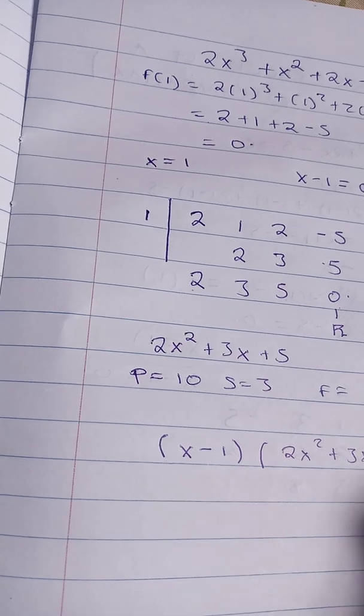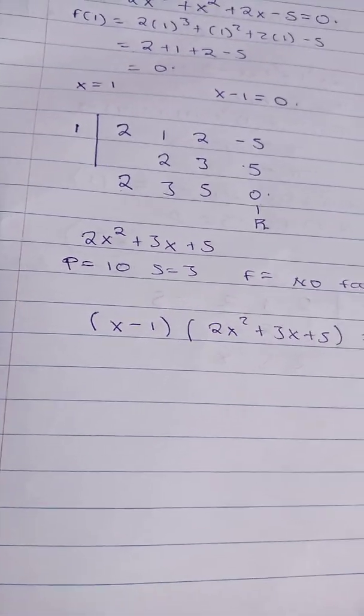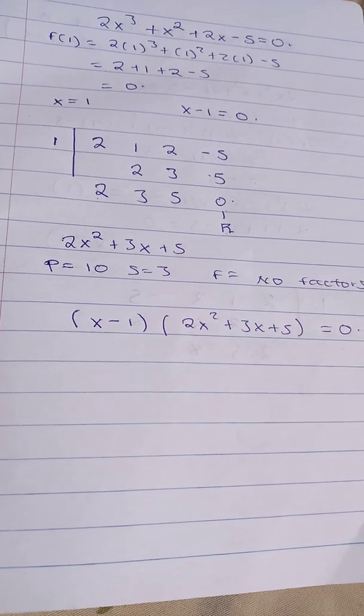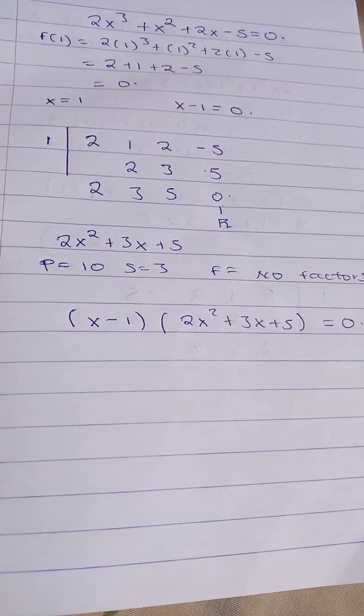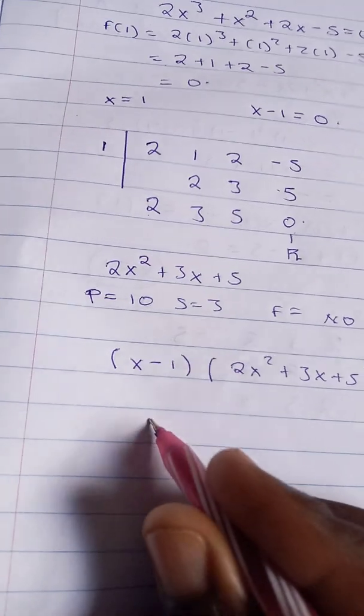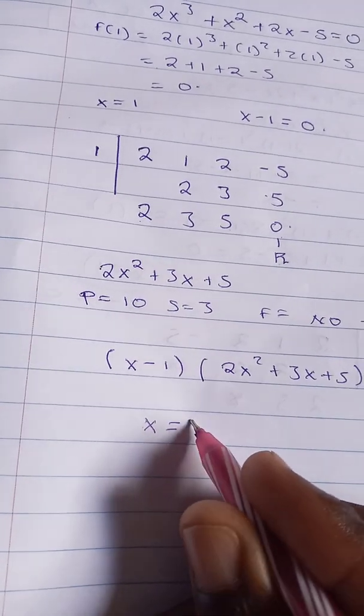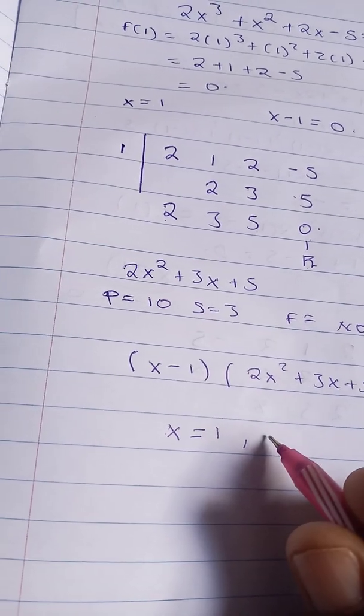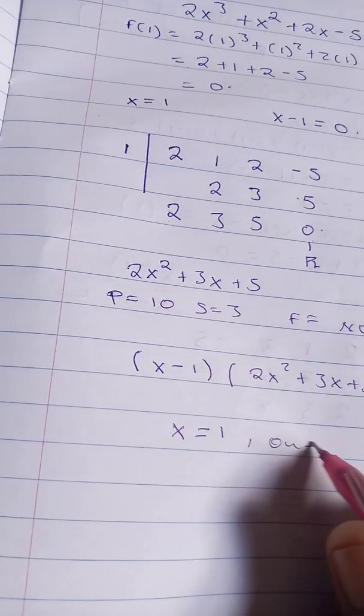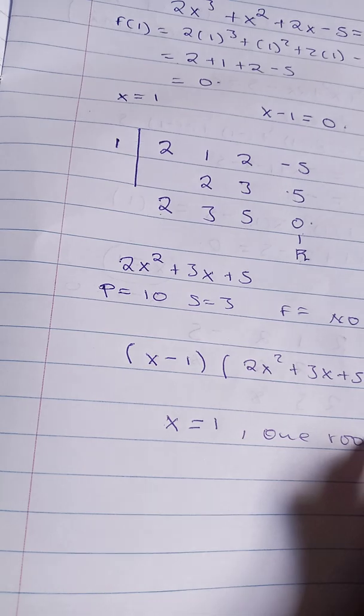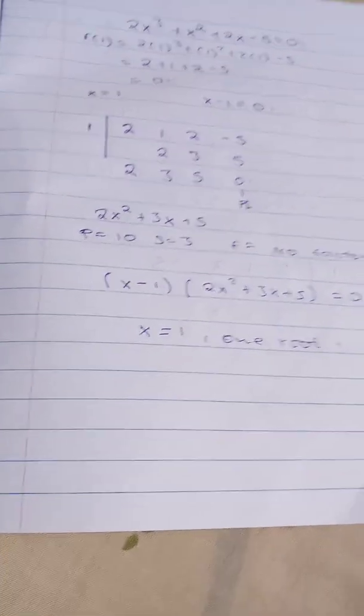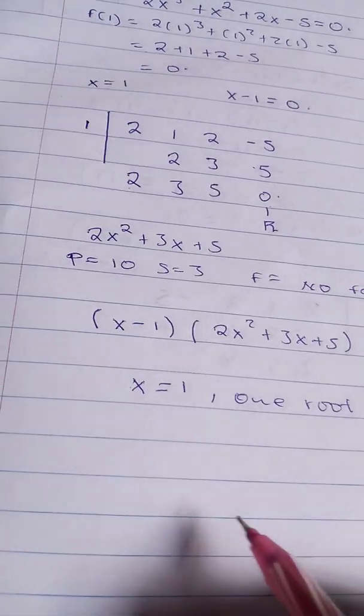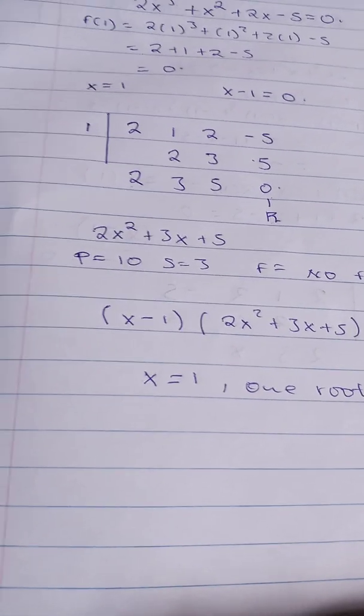Equal to zero. So we factorized this function. Now, in case the question was trying to ask you about determining the roots of this function, the answer would just be x = 1. This polynomial function only has one root. There are some polynomial functions, including some cubic functions, that only have got one root.